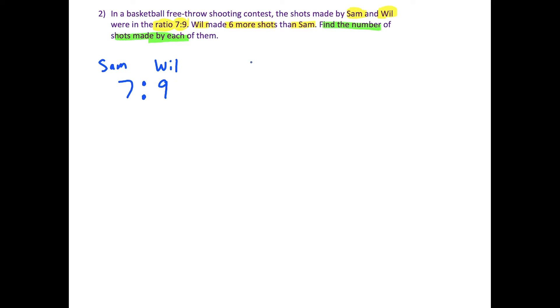But what they're telling us is that Will made 6 more shots than Sam. So if Sam made x shots, so this is like the number of shots that he made, well then Will is going to be x plus 6, because he made 6 more, so that's plus 6.